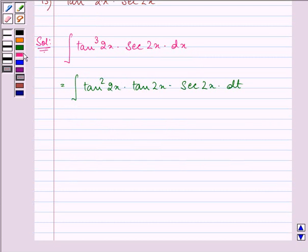Further, we know that tan squared 2x can also be written as secant squared 2x minus 1.